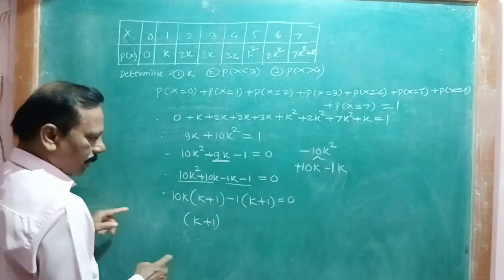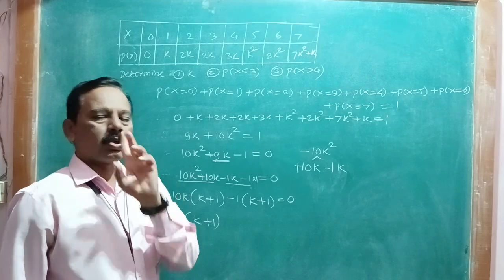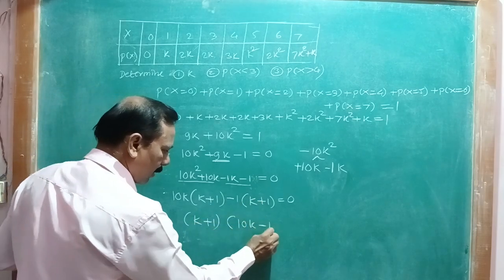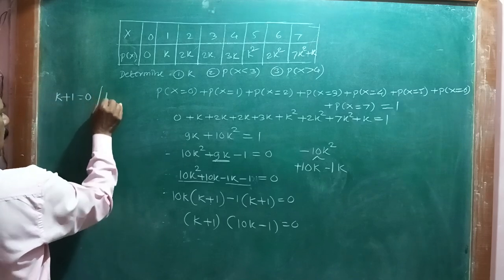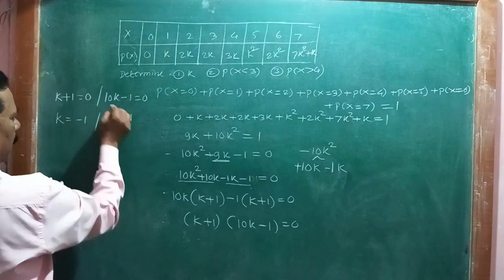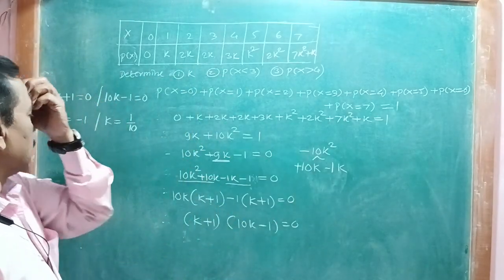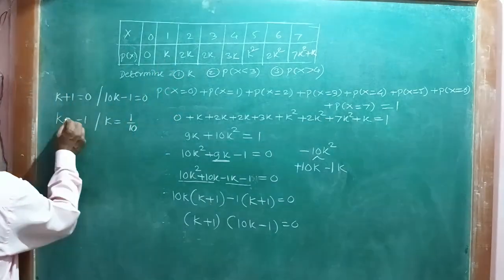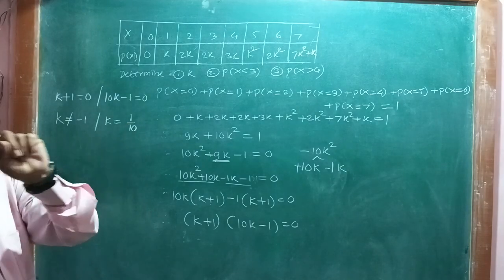Therefore, either k + 1 = 0 giving k = -1, or 10k - 1 = 0 giving k = 1/10. Since k = -1 would make probabilities negative, which is not possible, we reject k = -1. Therefore k = 1/10.